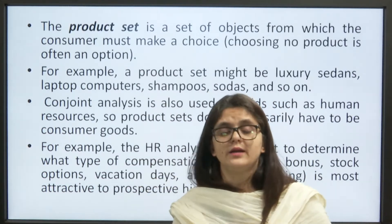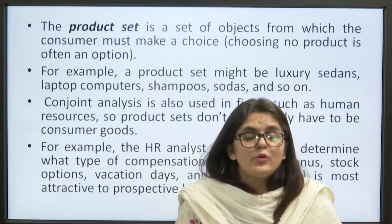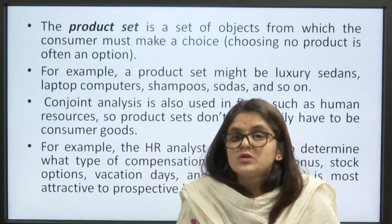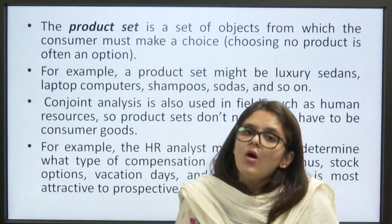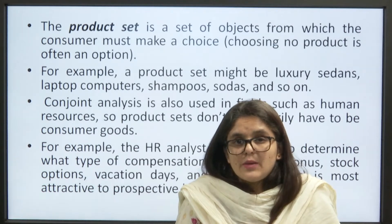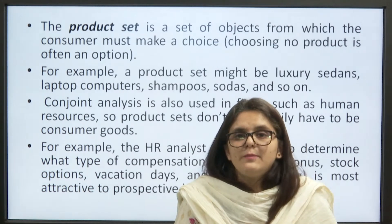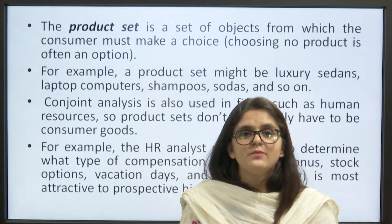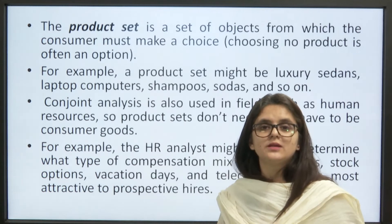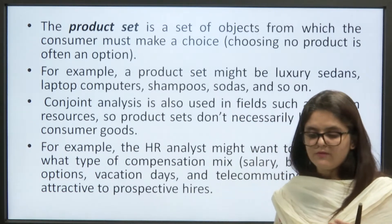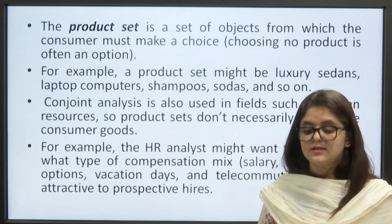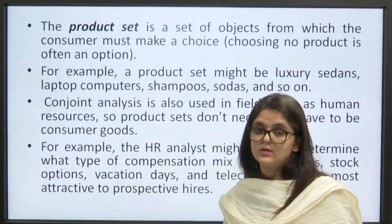Then comes the product set. A product set is a set of objects from which consumers must make a choice — choosing no product is often also an option. For example, a product set might be luxury sedans, laptops, computers, shampoos, soda, and so on. Conjoint analysis is used in human resources as well — product sets do not necessarily have to be consumer goods.